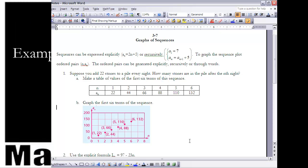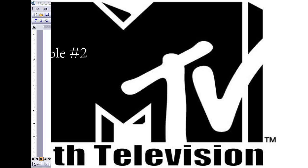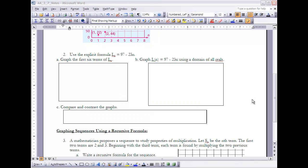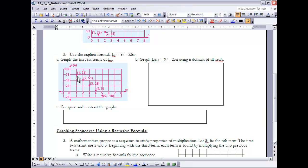Let's look at Example 2. It says: Use the explicit formula L_n = 97 - 23n. First of all, graph the first six terms of the sequence. Once again, when we're going to graph that, they're going to be discrete points. When I graph that, it's going to look like this: 74, 51, and so on, all the way down to the fifth term being -18.